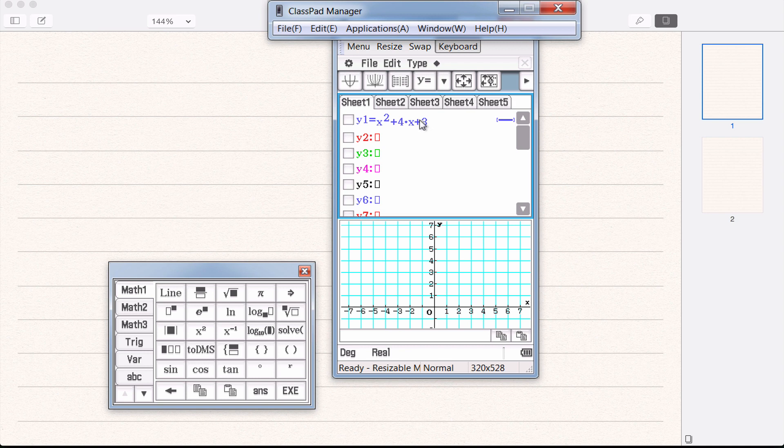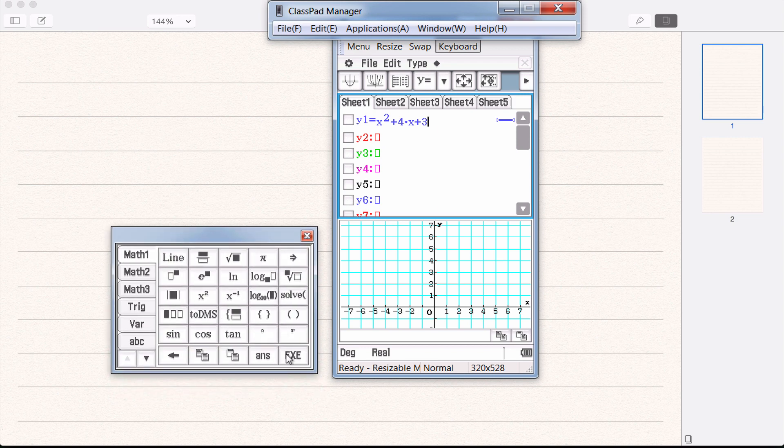What we need to do first is to type in our equation and the calculator already has the y equals written in. There's a y1 written here which just means it's the first equation you're writing. This one's the second equation and so on. So this is y equals, start typing your equation and the one we're going to use is x squared plus 4x plus 3.